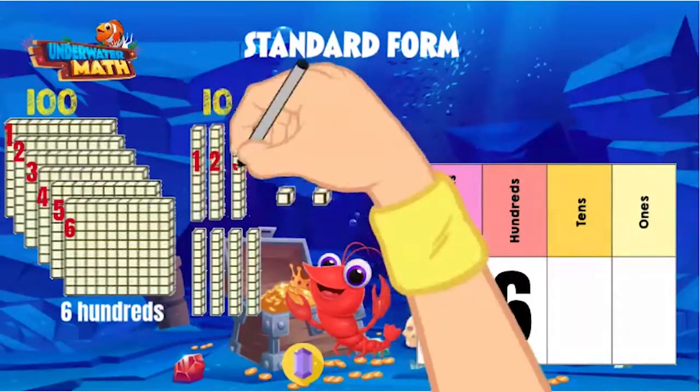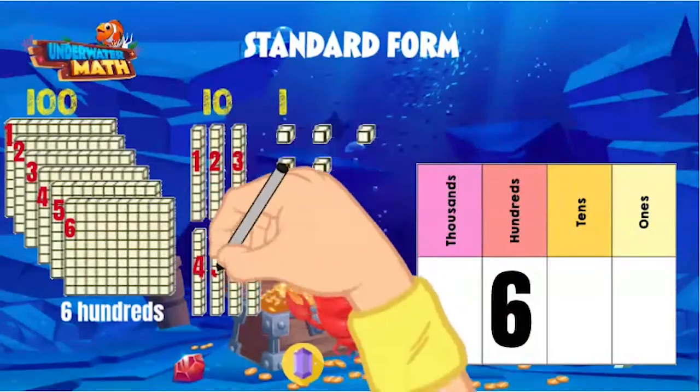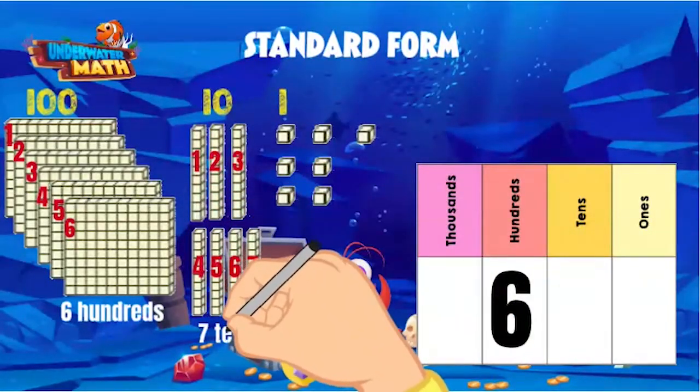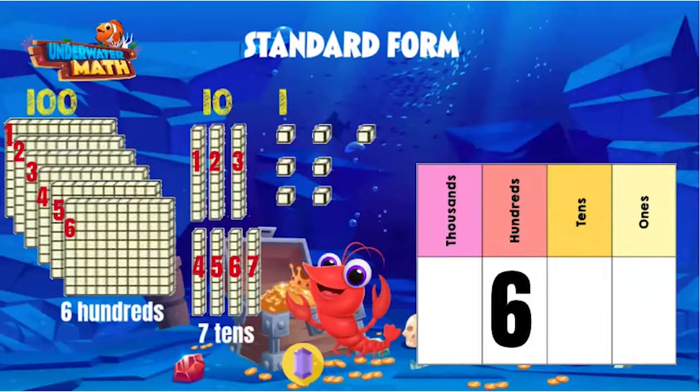How many tens? 1 ten, 2 tens, 3 tens, 4 tens, 5 tens, 6 tens, and 7 tens. What's the value of seven tens? That's right — 70.